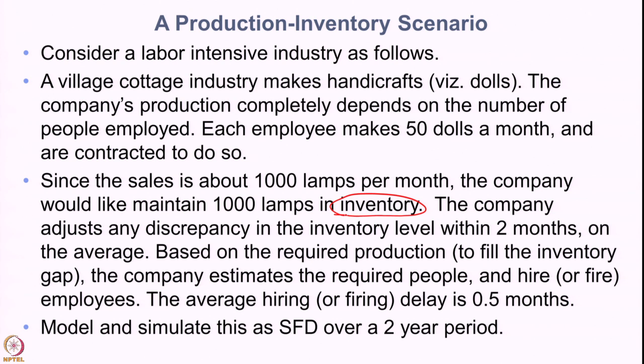If inventory is a stock, then something should be the flow into and out of it. Whenever sales happen, the inventory is going to reduce — that is pretty intuitive. So sales becomes a flow out which reduces inventory levels, and what adds to the inventory is production. The company's production must add to the inventory, so production is another flow that affects the stock of inventory.